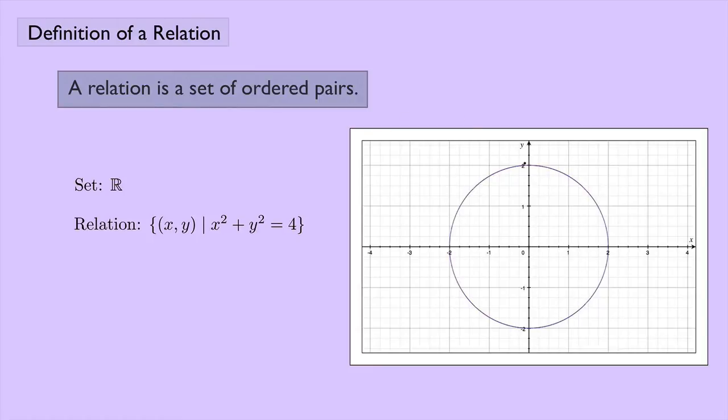Again, I could say that the point (0, 2) for example would be part of the relation, while the point (3, 1) would not be part of the relation. And again, this relation is a subset of R times R.